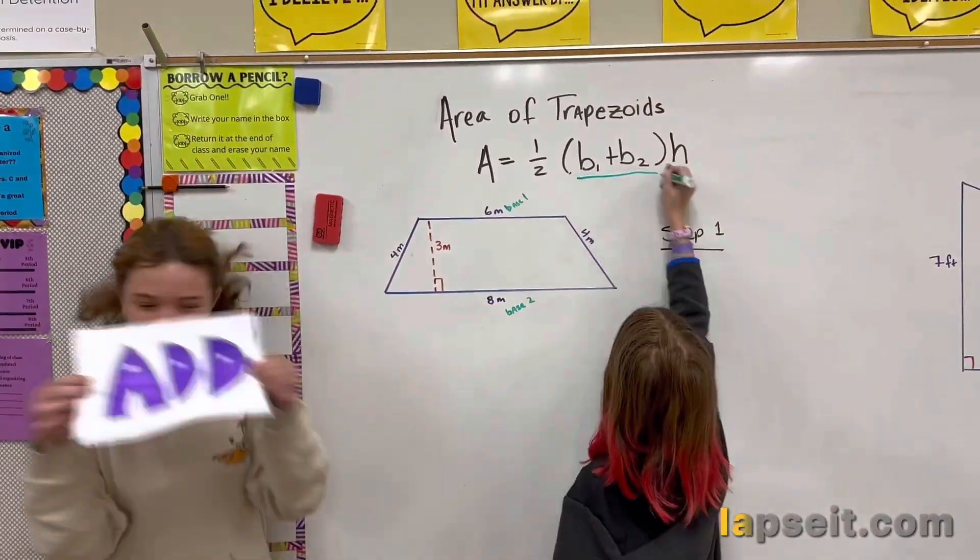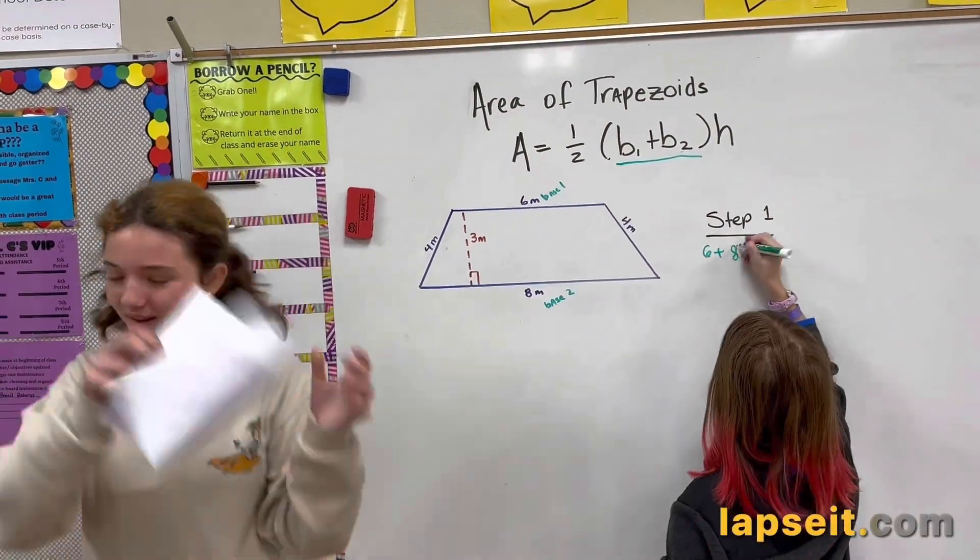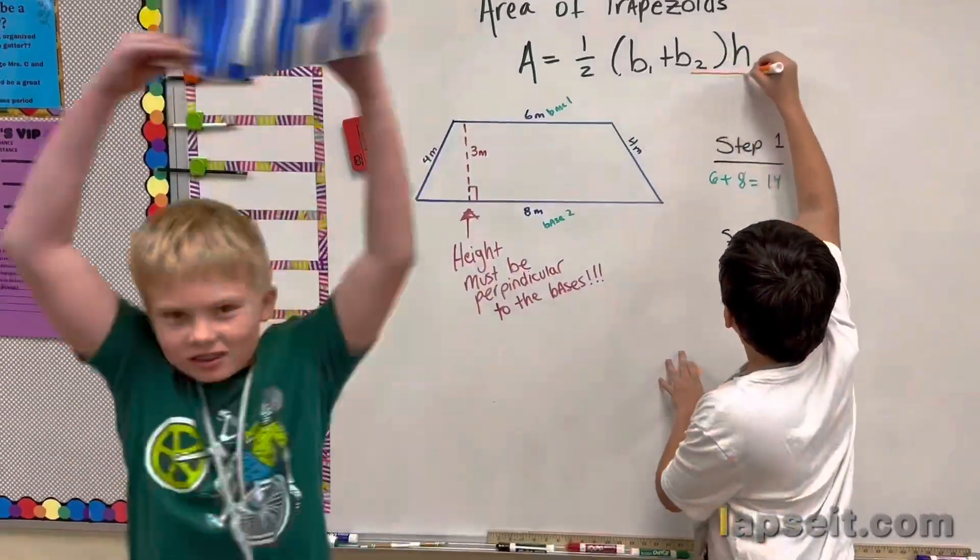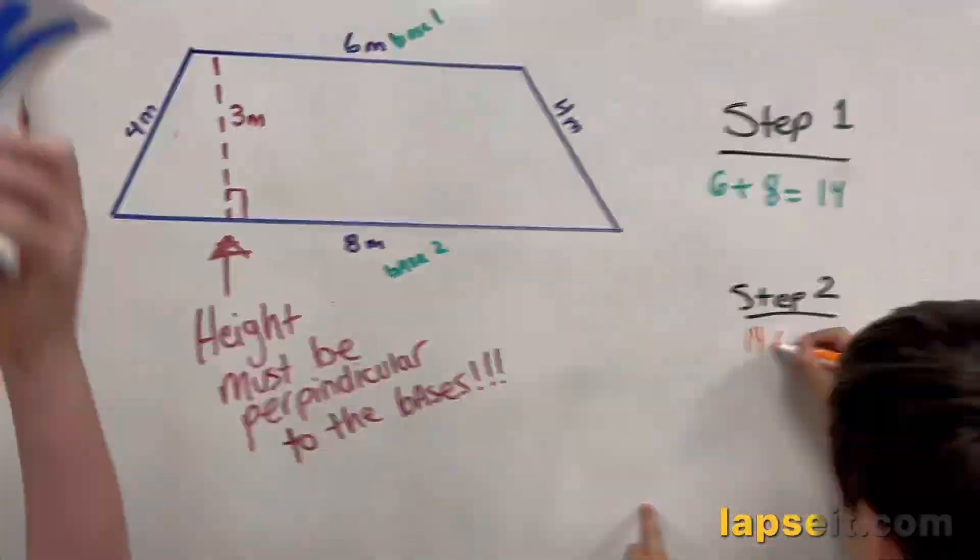Step one: Add the bases up. That's what you do. Add up base one and base two. Step two: Time to multiply. Take the sum times the height.